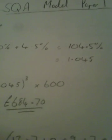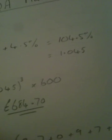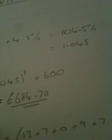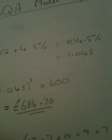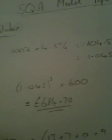Number one is a standard percentage increase question. It gives a price for an item, 600 pounds, which increases in value at 4.5% per year for three years. You're asked to find the value at the end of three years.